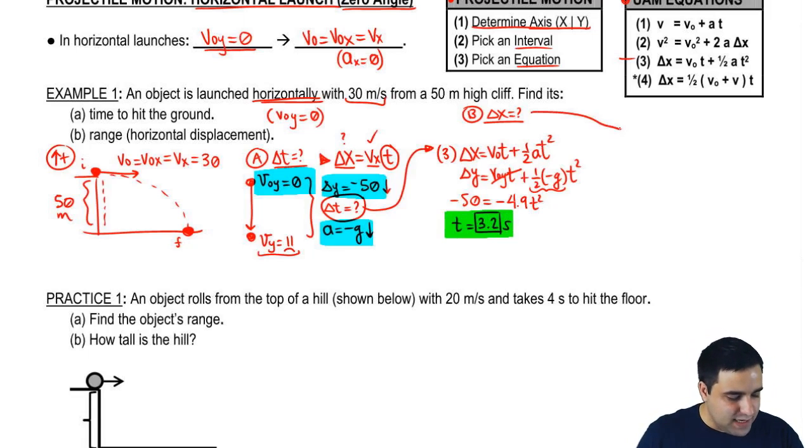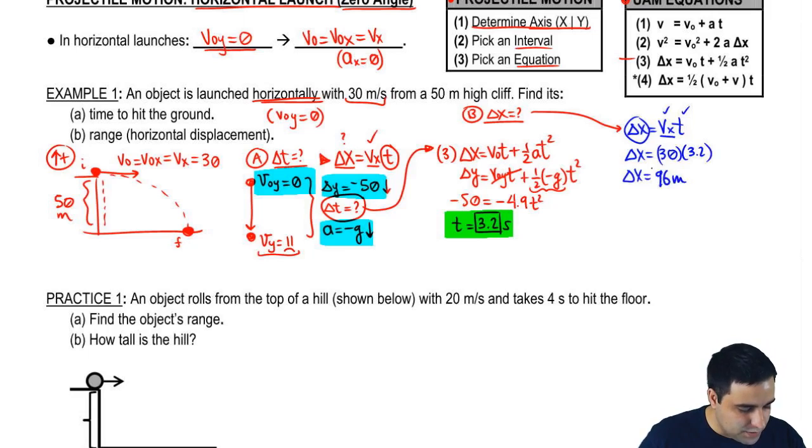Part B is asking for delta x. Delta x is obviously, if you go through your steps, determine the axis is obviously the x-axis. Pick an interval. There's only one interval here beginning to end, and pick an equation. The only equation for the x-axis is delta x equals vx t. So to find delta x, I only need vx, which I have, and t, which I now have as well. Delta x equals vx. Vx is 30. And the time is 3.2. So delta x is 96 meters. Pretty straightforward, I think.